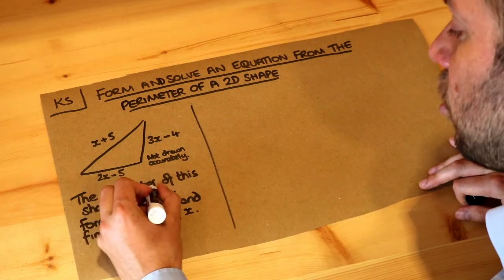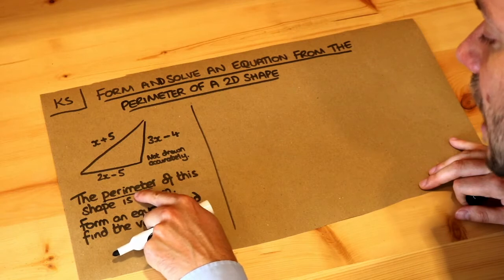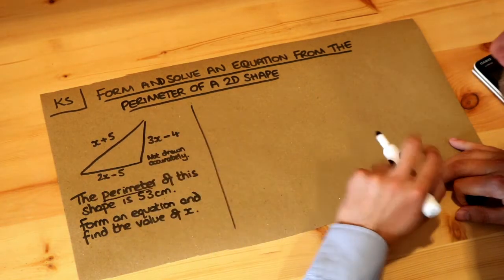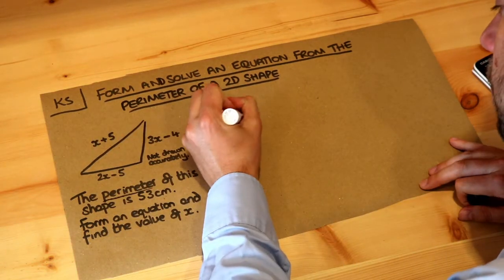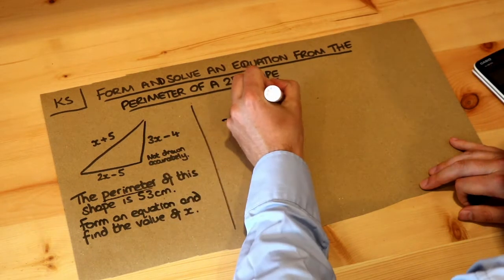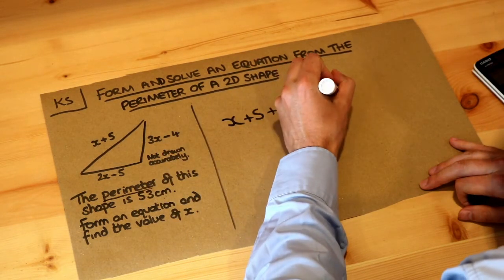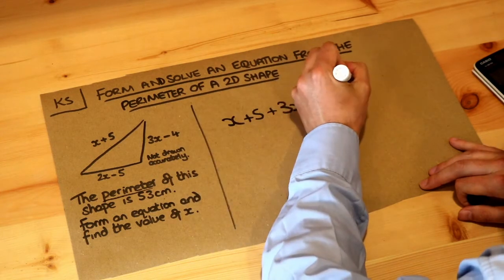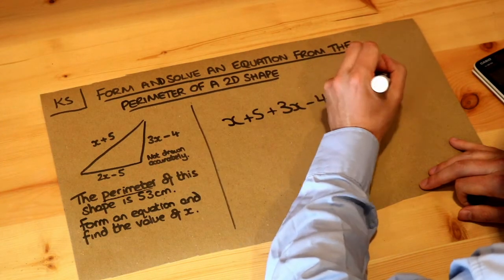Well let's do what we'd usually do when we find the perimeter, we would add the lengths together. So if we add these together, we've got x plus 5 plus 3x minus 4 plus 2x minus 5, and that would give us the perimeter when we add together all the lengths.